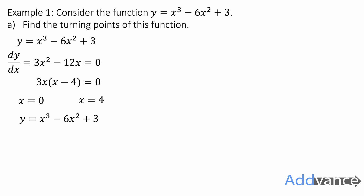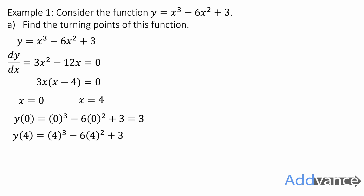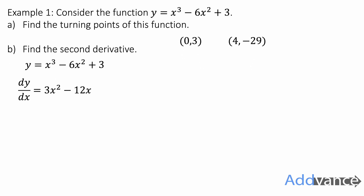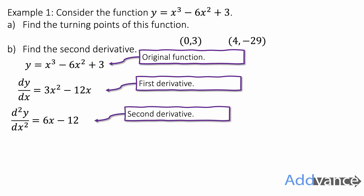To find the y coordinates, we substitute x equals 0 or x equals 4 into the original equation. Substituting x equals 0 gives a y coordinate of 3, so the coordinate is (0, 3). Substituting x equals 4 gives the coordinate (4, −29). We have found the turning points. Now we need the second derivative — we differentiate again and get 6x minus 12. The original function gives the y coordinate, the first derivative gives the gradient, and the second derivative tells us the gradient of the gradient — the concavity or shape of the function.